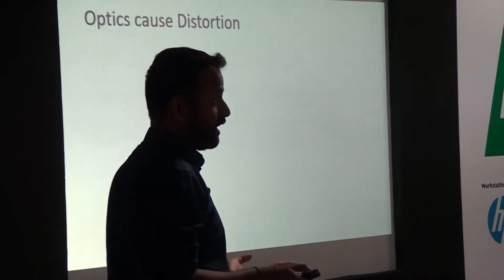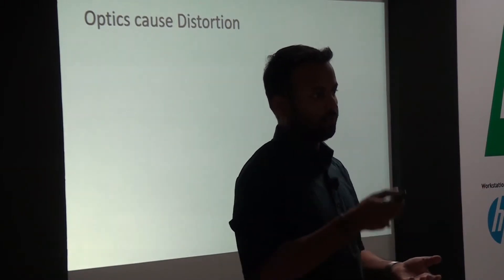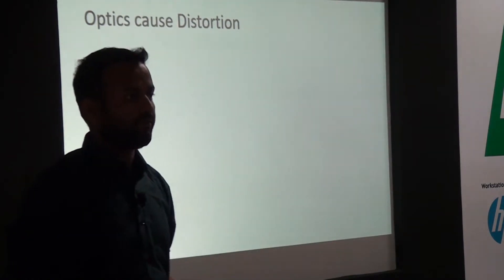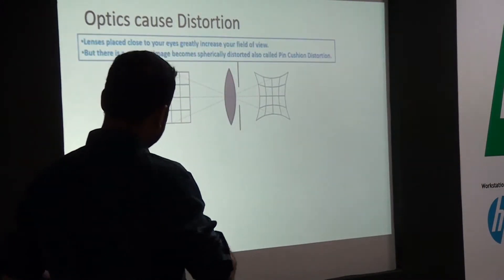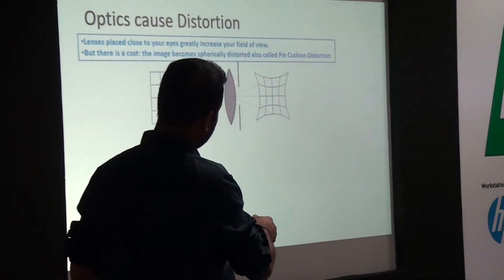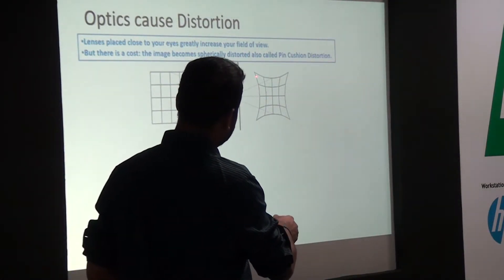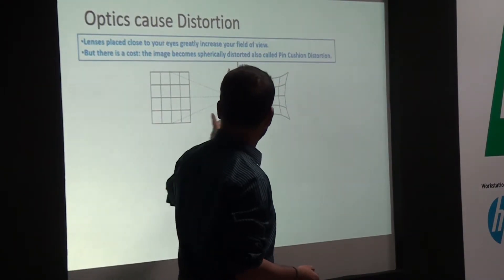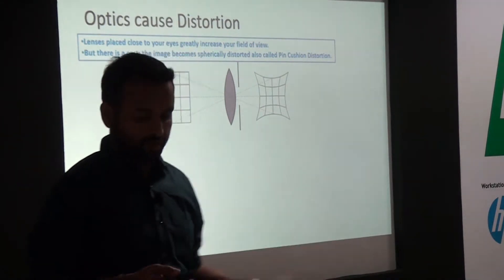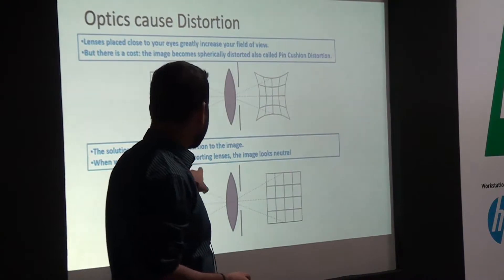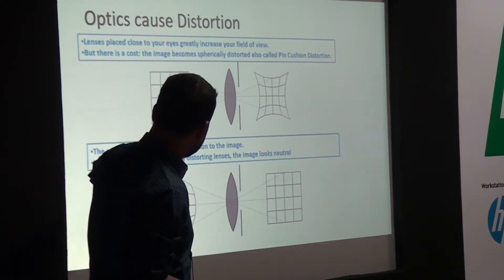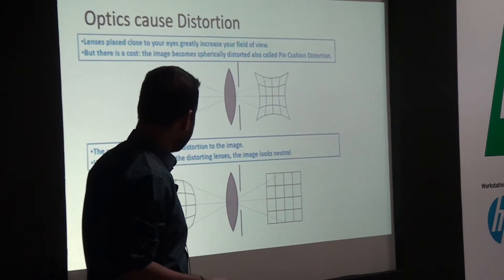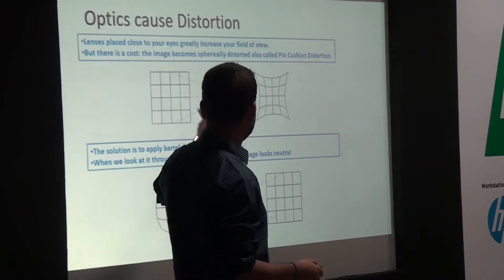Optics cause distortion — putting something very close to a magnifying lens distorts it. So how do Oculus or HTC Vive SDKs fix this? If this is a checkered grid, when you see it through a magnifying glass it becomes distorted. What is desired is that after passing through the lens it should still look the same without distortion. The solution is to apply barrel distortion to the image beforehand. When barrel distortion is applied to the original image, and then seen through the lens, it looks like what the original image used to be.